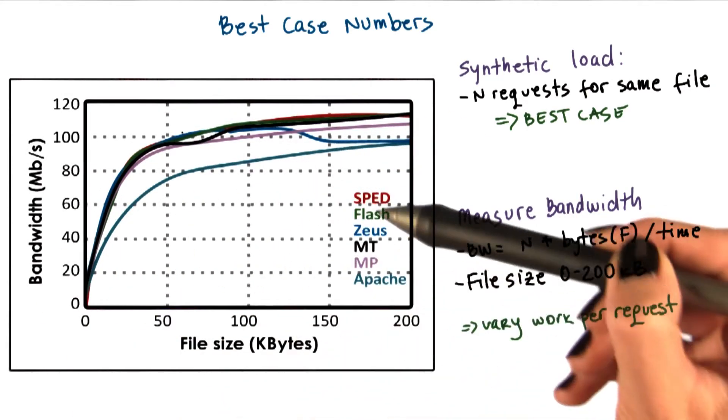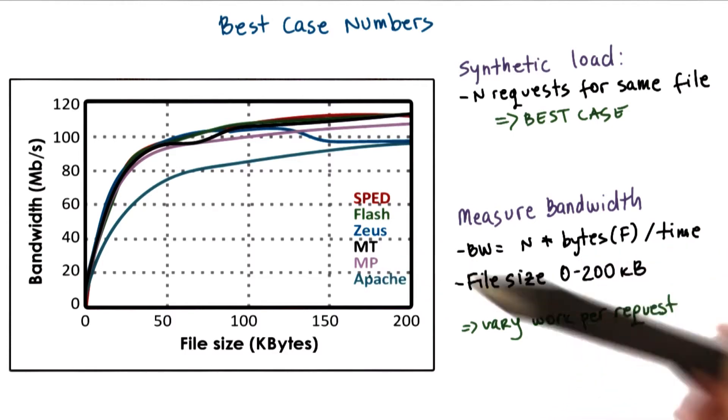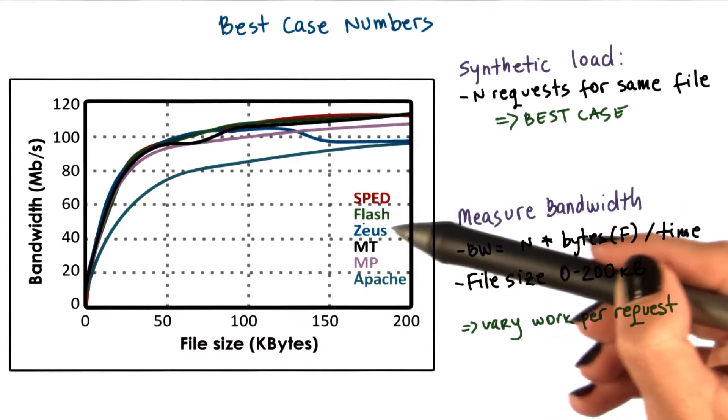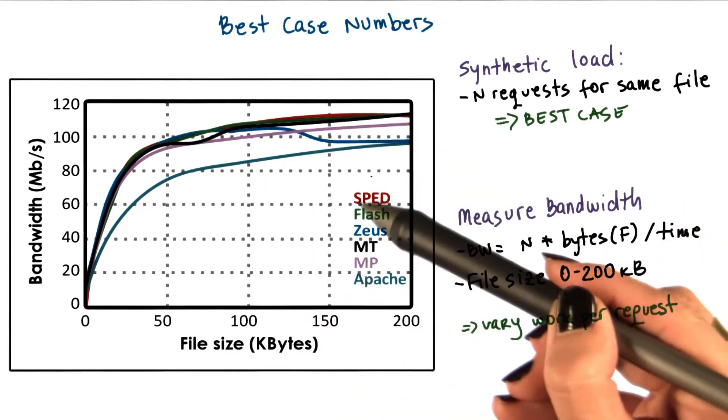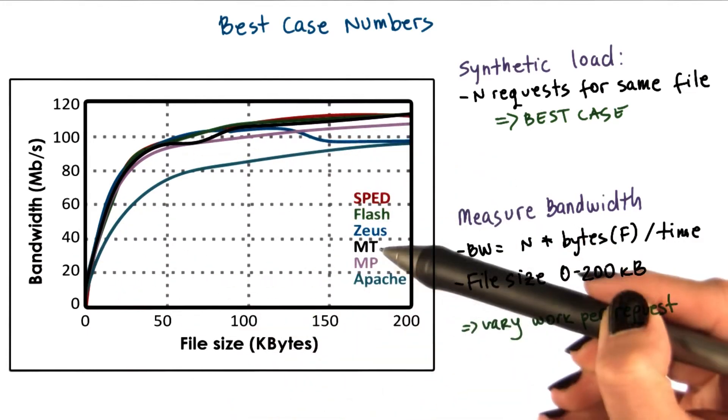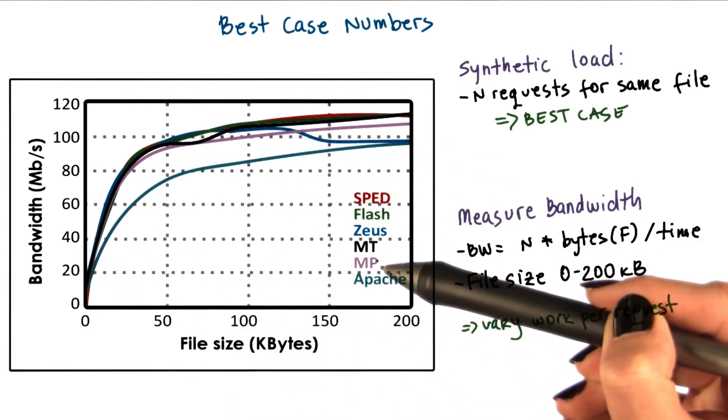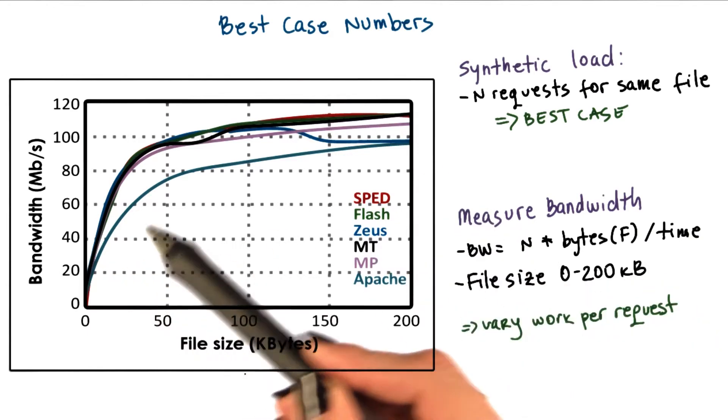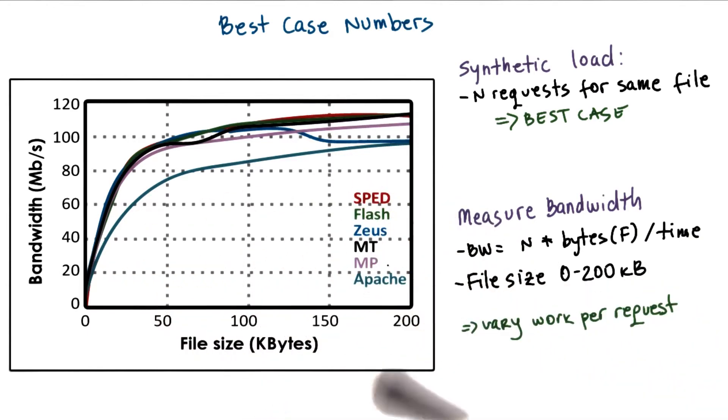The results show the curves for every one of the cases that they compare. The flash results are the green bar. SPED is the single process event-driven model. MT multi-threaded, MP multi-process. Apache, this bottom curve corresponds to the Apache implementation.